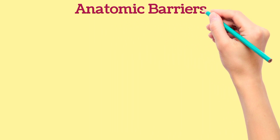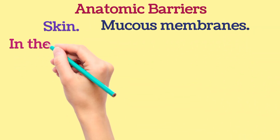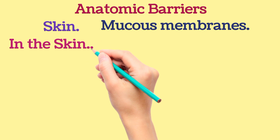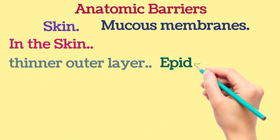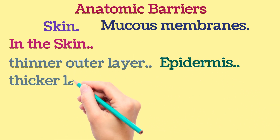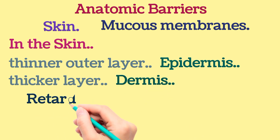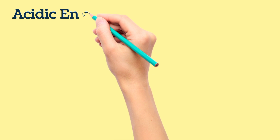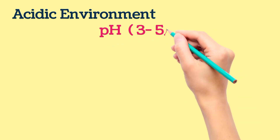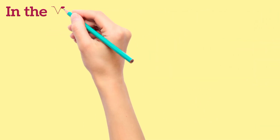The anatomic barriers include skin and mucous membranes. In the skin, the thinner outer layer called epidermis and thicker layer called dermis retards the entry of microbes. The acidic environment with pH 3 to 5 retards growth of microbes.